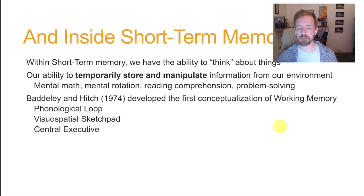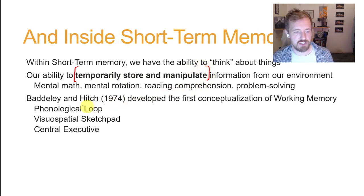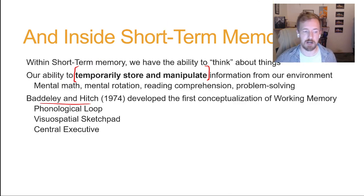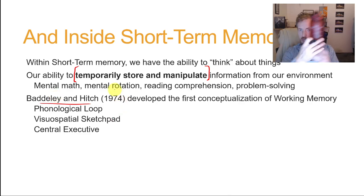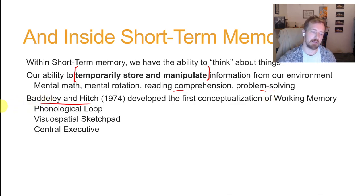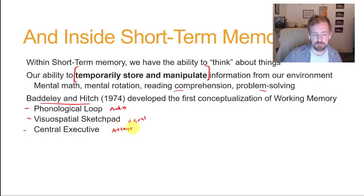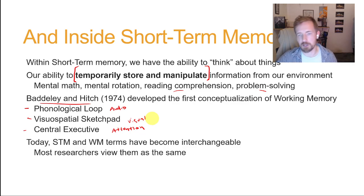Inside short-term memory we have the ability to think and manipulate objects. A classic definition from Baddeley and Hitch in the 70s describes working memory as the ability to temporarily store and manipulate information from our environment when it's not directly in front of us. This includes mental math, mental rotation of objects, reading comprehension, and problem solving. It can be broken down into subcomponents: a phonological loop for audio, a visuospatial sketchpad for visual information, and a central executive for attention — but we'll cover those in detail in a later unit.